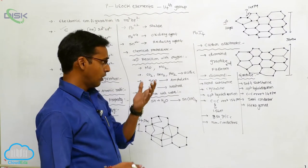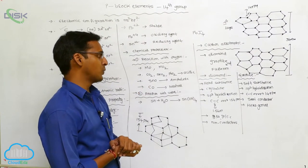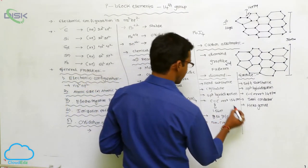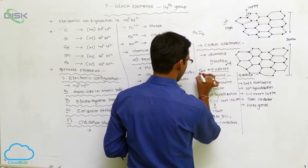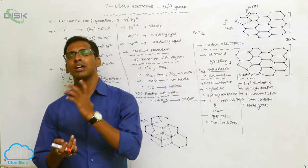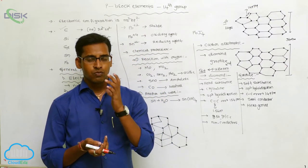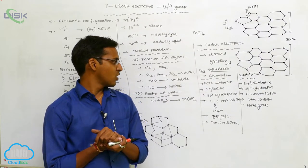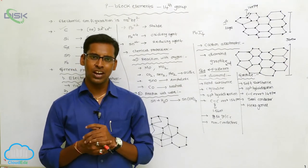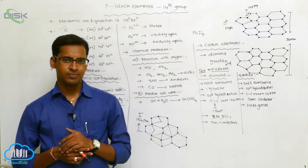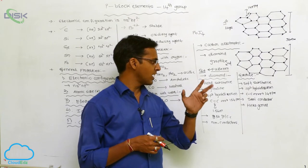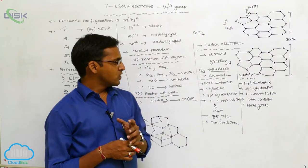Fullerene is a carbon allotrope. The C60 fullerene has a structure similar to a football shape. It was discovered by Kroto and Smalley and contains both hexagonal rings and pentagonal rings.